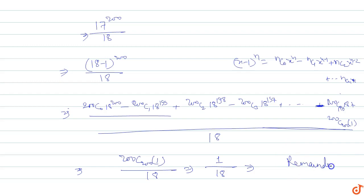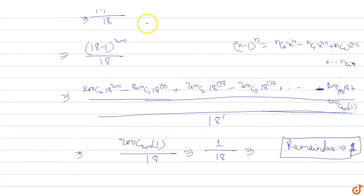The remainder is one. All the previous terms are completely divided. Only the last term (18-1)^200 gives us the remainder.